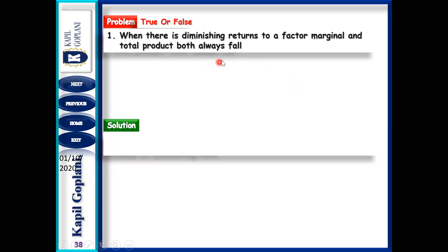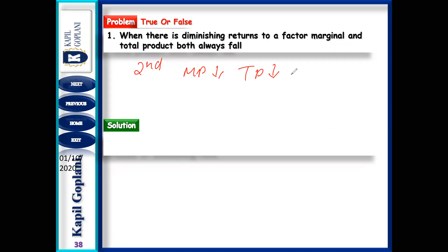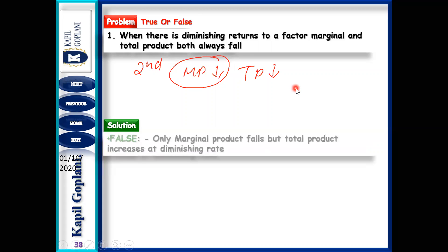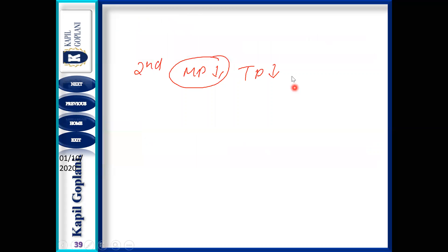Next: When there is diminishing return to a factor, MP and TP both always fall. When there is the second stage, MP falls and TP also falls — is this correct? No, it is false. MP falls, but TP is still increasing, only the increasing rate is diminishing.